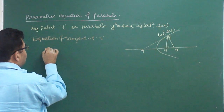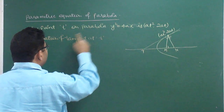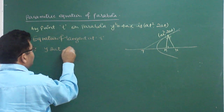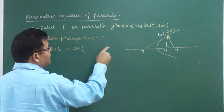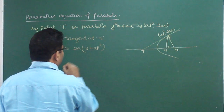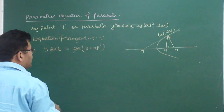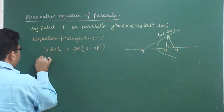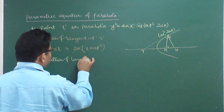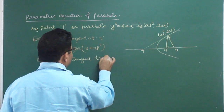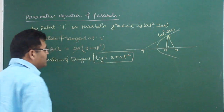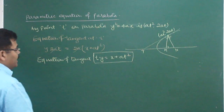Y, Y1. We have learnt this — that Y² should be replaced by Y·Y1. And Y1 is 2at. So Y into 2at is equal to 2a into (x + x1), and x1 is at². So x + at², and 2a can be cancelled. So the equation of tangent at T is: ty = x + at². You must remember this: ty = x + at².